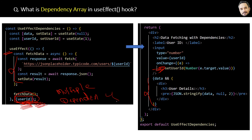In the UI we have a userId dropdown, and on the change event other UI elements are here. I won't go into the details of these UI elements because our goal is just understanding the dependency array, which we already covered — and that's the answer to this question.